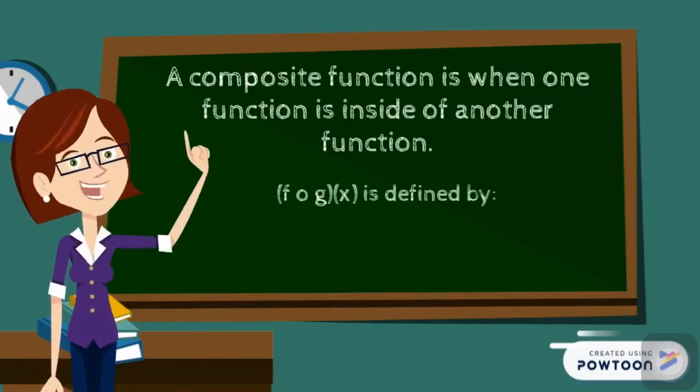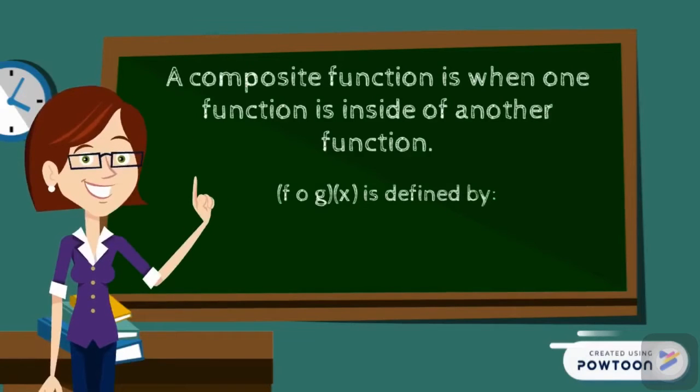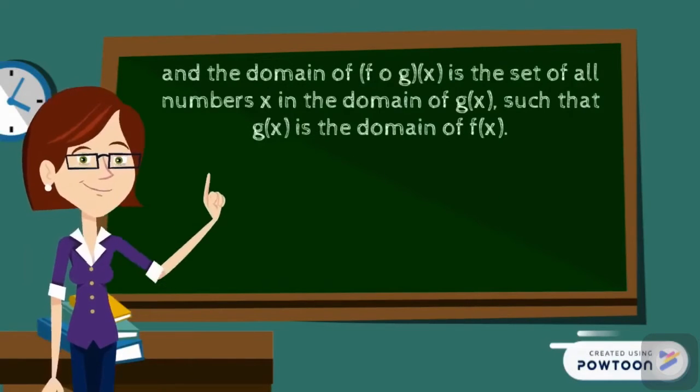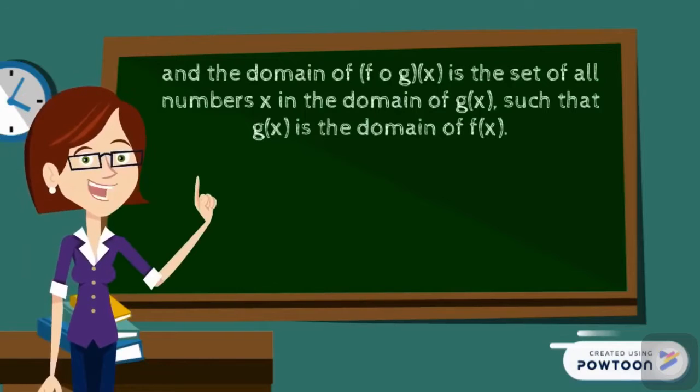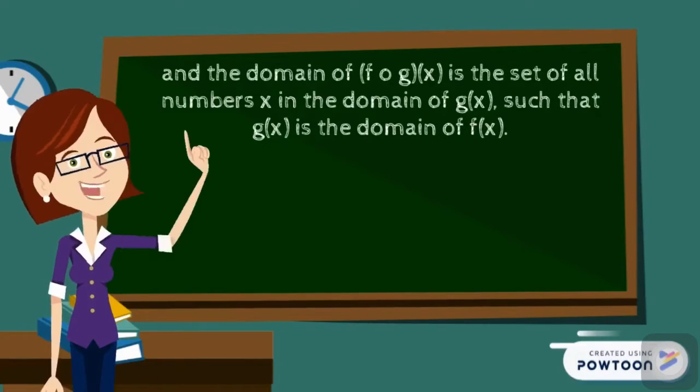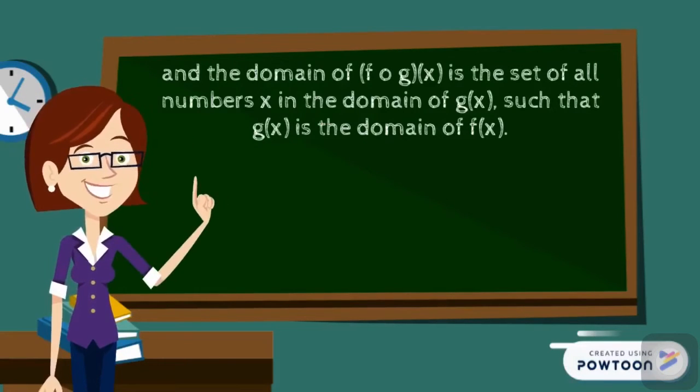Given two functions f and g, the composite function denoted by (f o g) is defined by this equation. And the domain of (f o g)(x) is the set of all numbers x in the domain of g(x) such that g(x) is the domain of f(x).